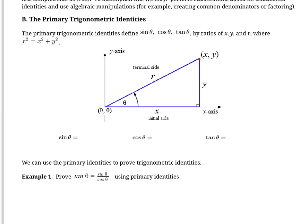The primary identities can be derived by looking at a point on the coordinate plane. If we draw a right-angled triangle to denote the x and y lengths, we're left with a right-angled triangle whose hypotenuse we can think of as r, the radius of a circle. Sine of any angle equals opposite over hypotenuse, so sine θ = y/r. Cos of any angle equals adjacent over hypotenuse, so cos θ = x/r. And tan θ equals opposite over adjacent, which is y/x.